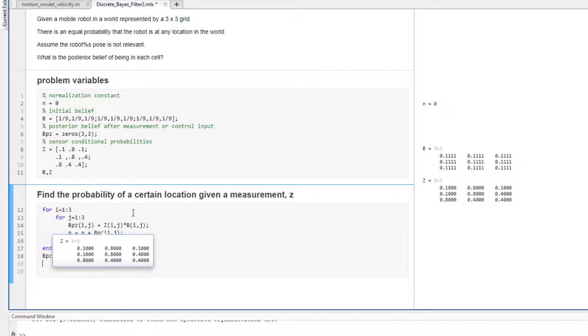And then down here I increment my normalization constant. So when I run this section, I get that my belief that I am in any certain cell in the world is given by the following values.